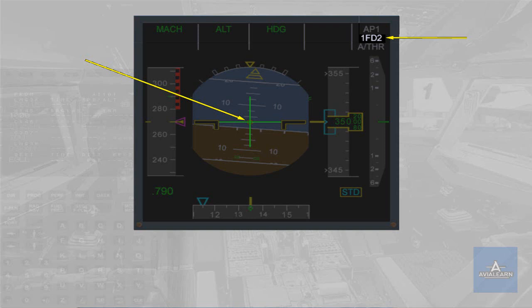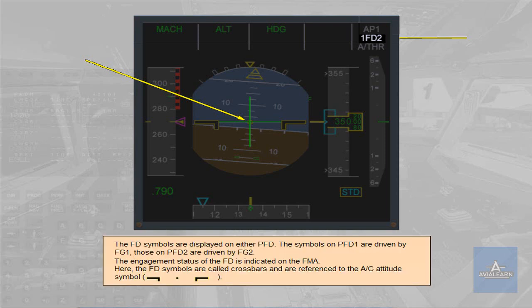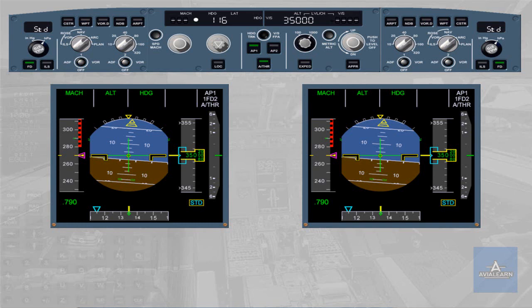The flight director symbols are called crossbars and are referenced to the aircraft attitude symbol. To turn the flight director on or off, use the flight director push button located on either EFIS control panel. When a flight director is on, the green bars of the corresponding push button are illuminated. Here both FDs are on.